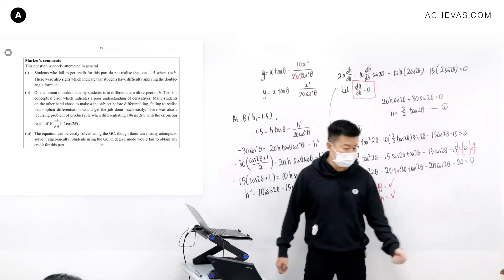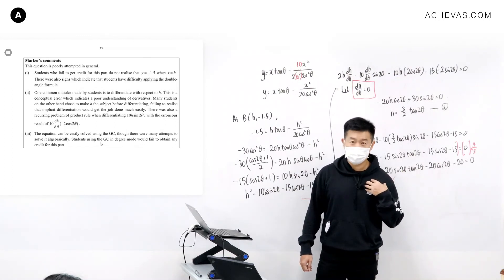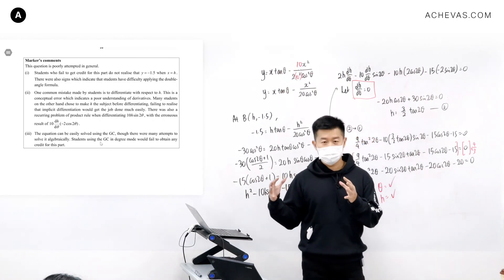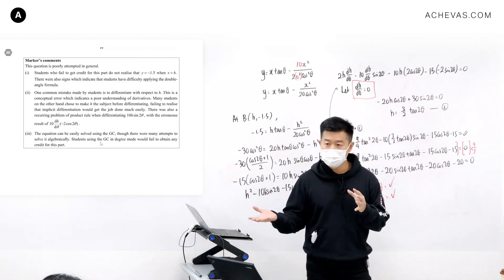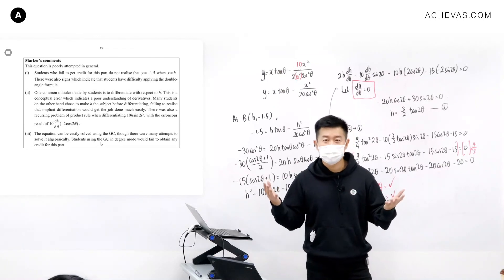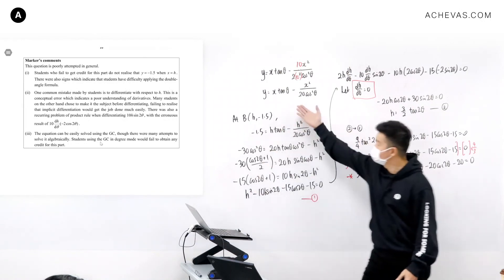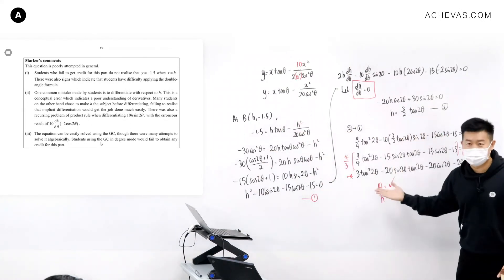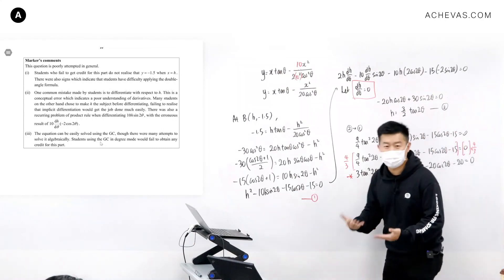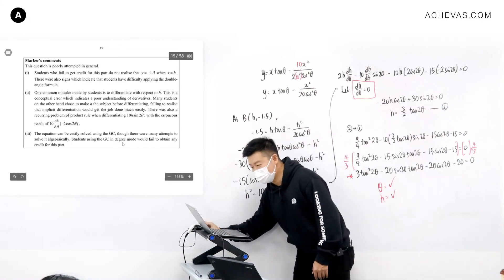A lot of us by default are just not going to use a GC — we solve everything without it. But Cambridge says otherwise: by default, every question should be solved using a GC, unless the question says otherwise. That was the reason Singapore moved into H2 Math — we want to learn to depend on our GC. During my time we didn't use GC, so I spent the bulk of my time doing calculations the machine can do for me — I could have learned more. The computer cannot make decisions or think independently, but we can. That is why the GC is very crucial. Use your GC to solve this last part.